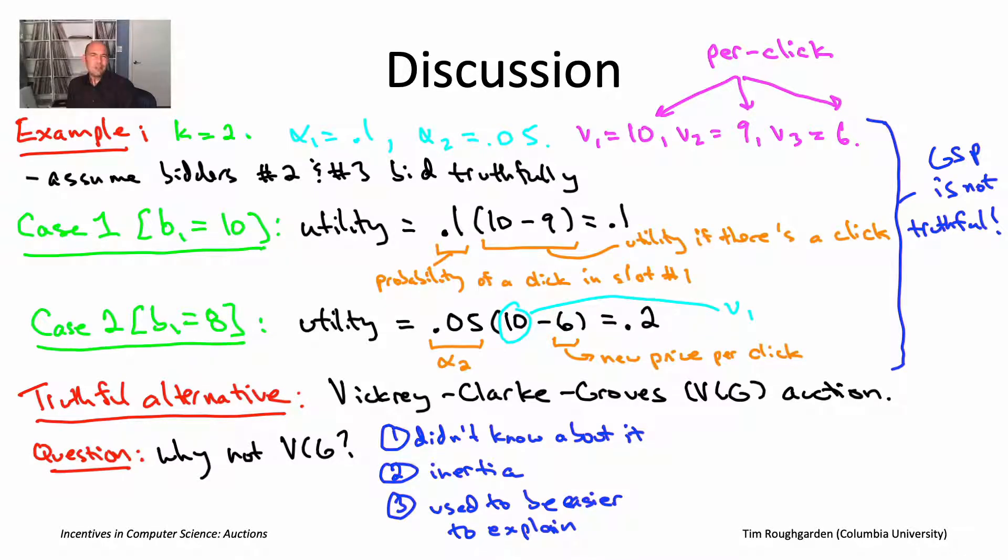Another reason why it's a little bit scary to contemplate migrating from GSP to VCG is you might be worried about short-term revenue losses. Why would that be true? Well, the reason GSP is not truthful is because bidders have an incentive to underbid. We saw that in the example. You might want to bid low to drop down to a lower slot. You get fewer clicks, but you get them at a big discount. So in GSP, you're going to expect underbidding. And that is indeed what you see in practice. Advertisers tend to bid less than their value as you'd expect given the amount of money that's at stake.